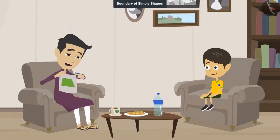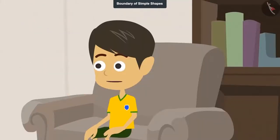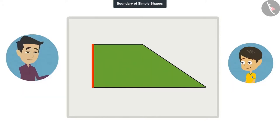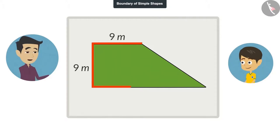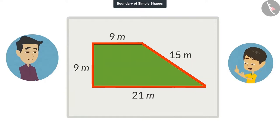Find out the length of the boundary and tell me. Okay, tell me the length of all the lines. The length of this line is 9 meters. The length of this line is also 9 meters. The length of the bottom line is 21 meters, and the length of this slanting line is 15 meters. Okay, now I know the length of all the lines. By adding these, I will get the length of the field's boundary.